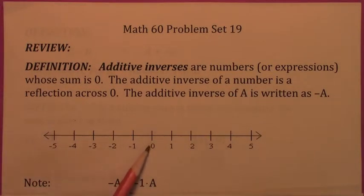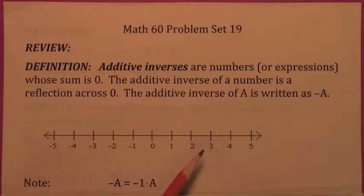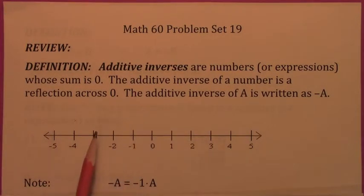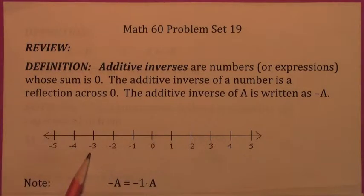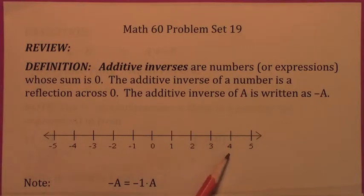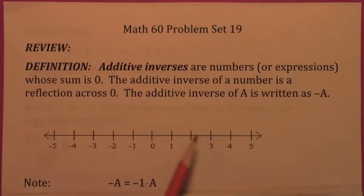A geometric way to think of it is that the additive inverse of a number is on the other side of zero — it's a reflection of that number across zero. For example, the additive inverse of three is negative three. The additive inverse of negative four is four. So every time you take the additive inverse, you reflect across zero.